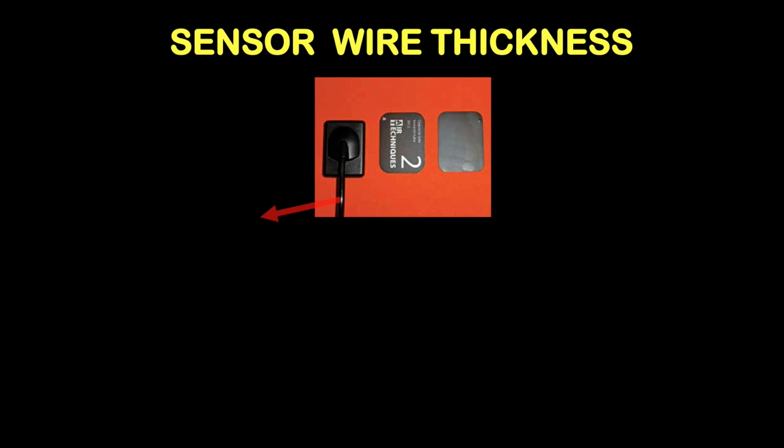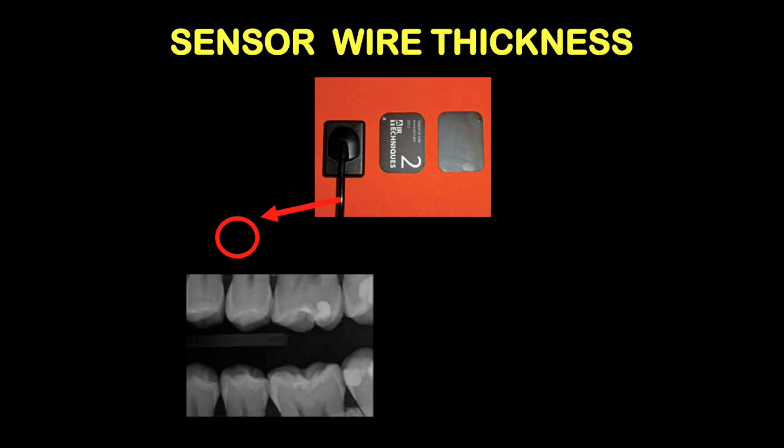The next issue is that of sensor wire thickness. This is something that very often is not immediately observable. But any wired sensor has a thickness of wire that must go in between the teeth. This separates the teeth and leaves an area of darkness, totally non-diagnostic, that doesn't show any oral tissues. And this is the wire that has to go in between the teeth to allow the sensor to be placed on the lingual.